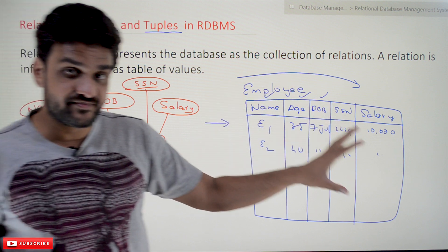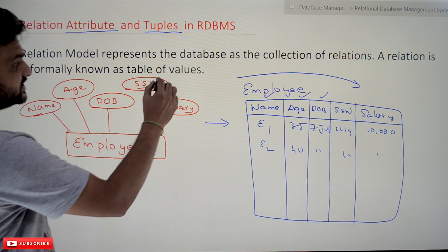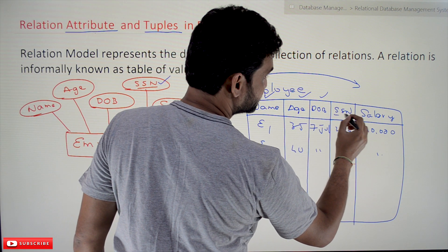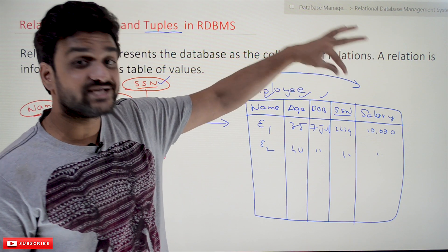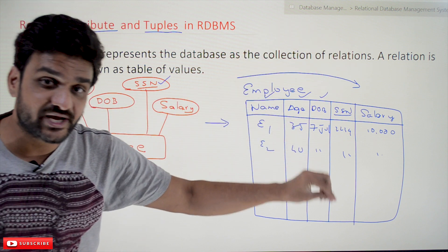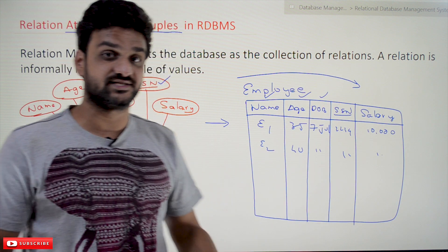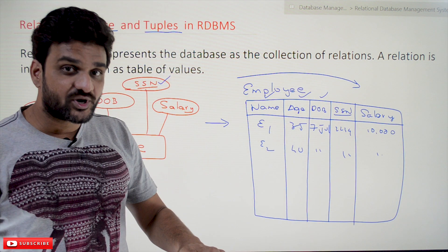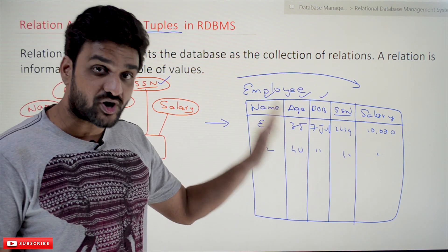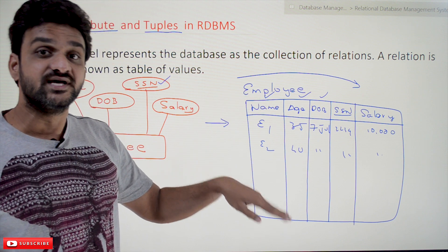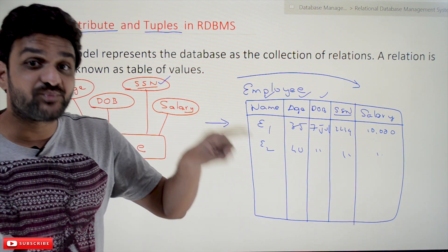Now, how to represent the key attribute — we are going to represent the key attribute with an underline, and this key attribute is what we call the primary key of a table. What is this primary key and what are the different key constraints available — we will try to understand those in our later classes.